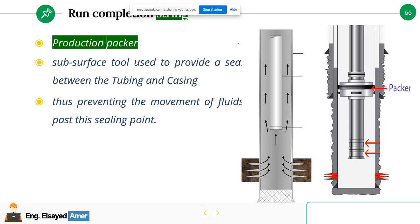We discussed the packer function. What is the packer? It's equipment that is used to seal between the tubing and the casing. The tubing and casing area is called annulus. This annulus should always be empty. No oil or gas or any reservoir fluids should enter this area. This area should always be clear.